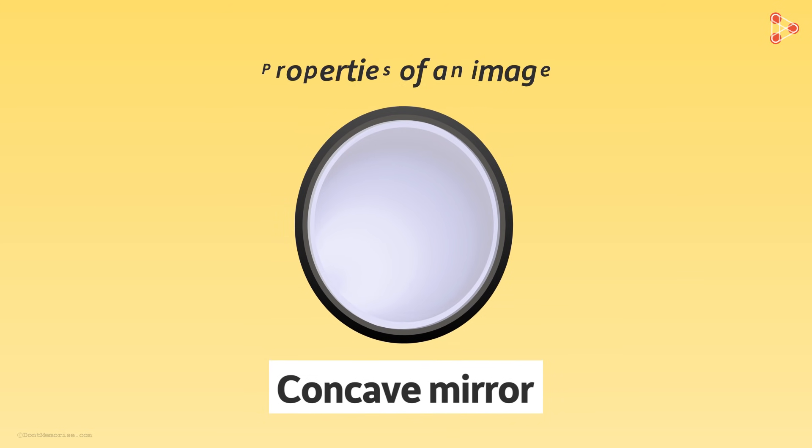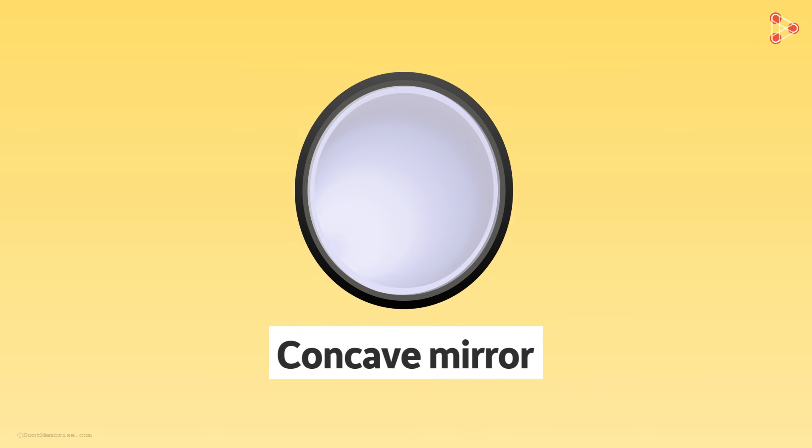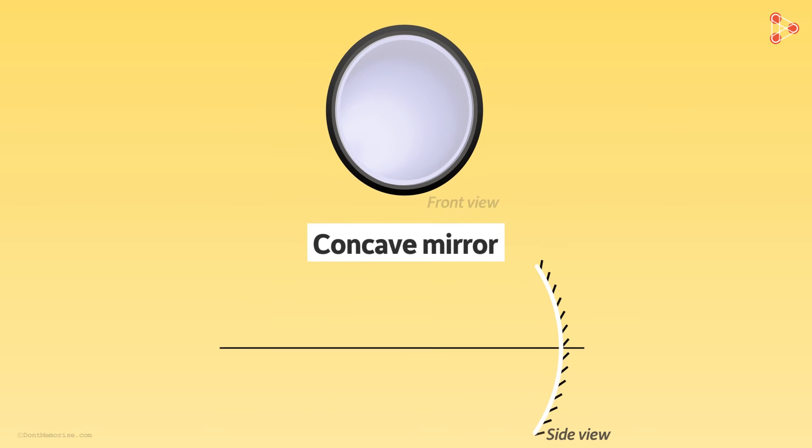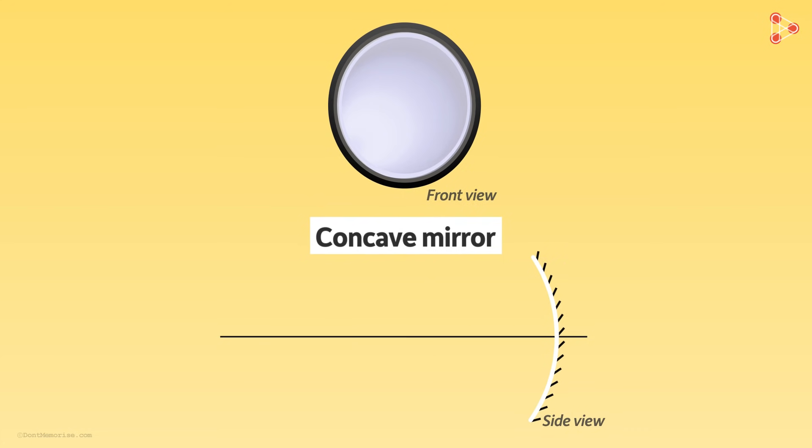So let's try and find out the properties of an image formed by a concave mirror. I will show you two views of the mirror: the front view and the side view. The side view is just to show the different positions where the object is kept as it's difficult to do that in the front view. So let P be its pole, C its center of curvature. This line is the principal axis and F is the principal focus, also called focal point.